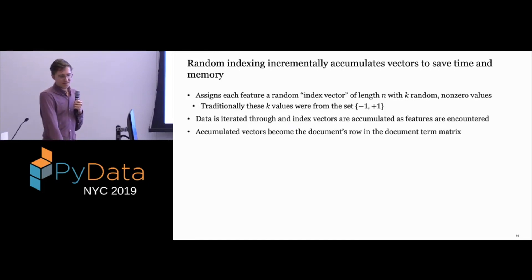This description won't be very clear at the beginning, but of course we have Python code to look at. So instead of doing this huge matrix multiply, to save time and memory, you'll be assigning every feature in your vocabulary a random index vector, which is just some vector of length n with k non-zero values in it. Traditionally, these k non-zero values are just taken from negative one and one, but different flavors differ on what indexes they're choosing. And then you just iterate over your corpus and for each document, you just add up these vectors. So if you encounter the word 'dog,' you add the index vector for 'dog' to your row for that document. You just accumulate these through your whole corpus for every document. And then at the end, you have this iterative process rather than this big matrix multiply that you would have to have both matrices in memory for.